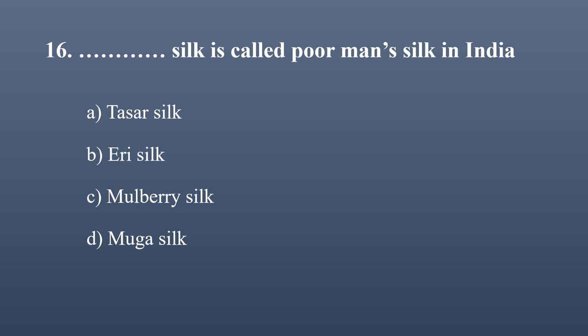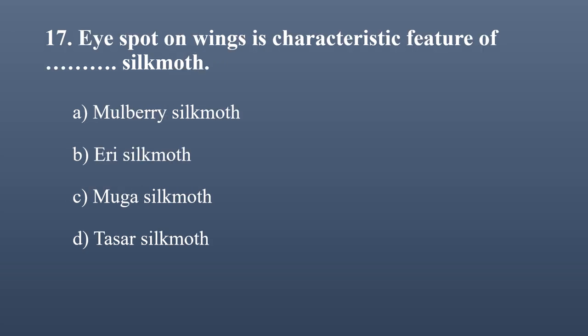Which silk is called 'poor man's silk' in India? Options: Tassar silk, Eri silk, mulberry silk, Muga silk. The correct option is Eri silk. About 90 percent of tribal people in Indo-Mongoloid region and Tibet are engaged in Eri silk production, which is why it is called poor man's silk in India.